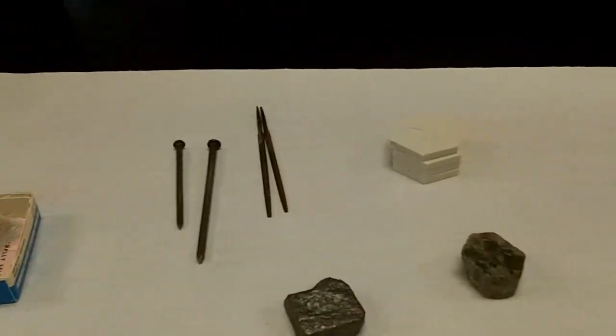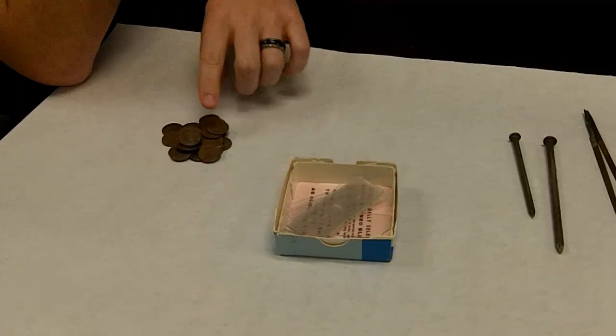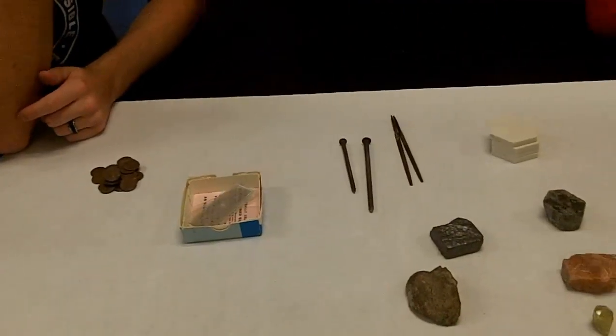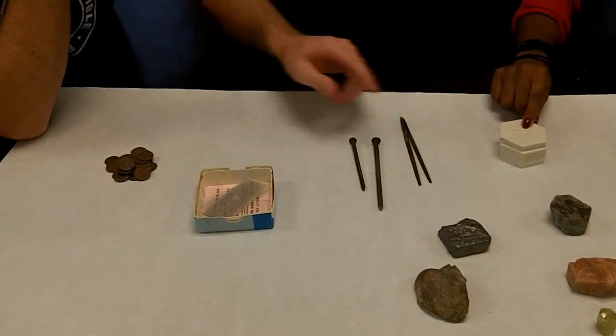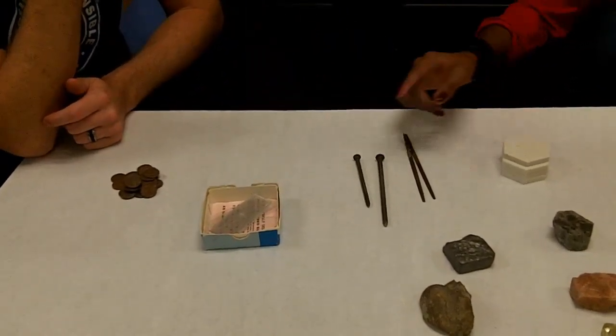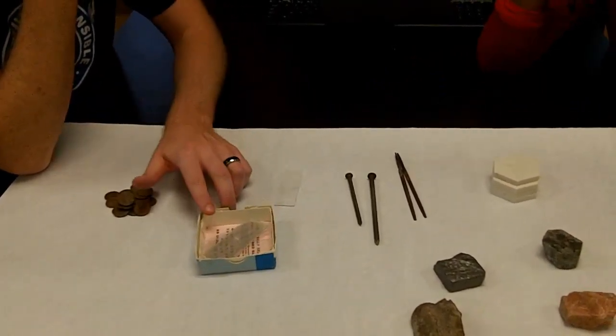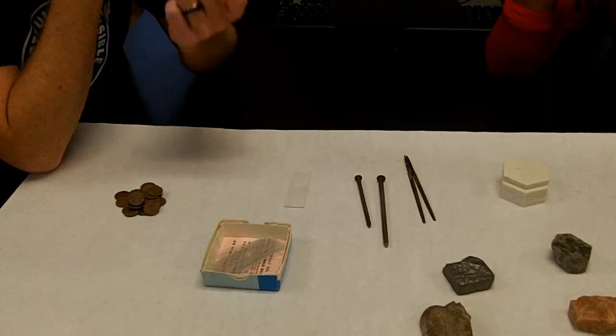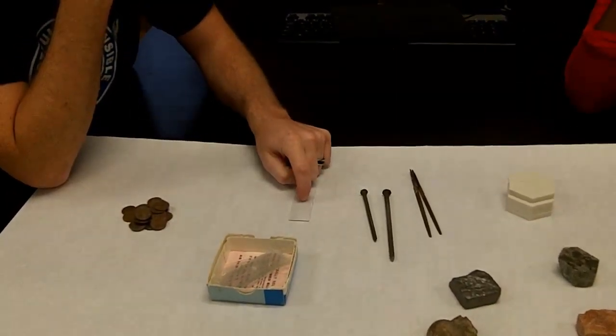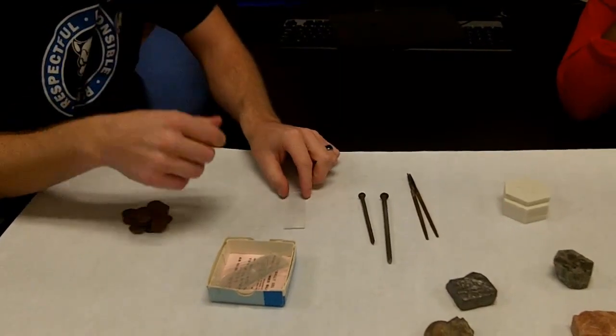So, I'm going to ask you guys, which one do you think is the softest out of this group? So, we've got fingernails, pennies, glass, nails, or streak plate. Which one's the softest? The plate. Think the plate's the softest? So, the easiest to scratch? Maybe. No, no, no, the glass. The glass is easiest to scratch. Maybe. Okay. Well, how would we figure out which one's harder? My fingernail or the glass? How could we figure out which one's harder? Scratch it. Scratch it, right? Okay.